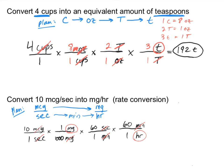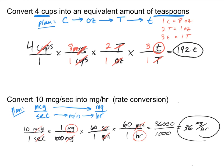Multiplying all numerators: 10 times 60 times 60 gives 36,000. Dividing by the product of denominators — 1 times 1,000 times 1 times 1 equals 1,000 — we get 36,000 divided by 1,000, which is 36. The result is 36 milligrams per hour.